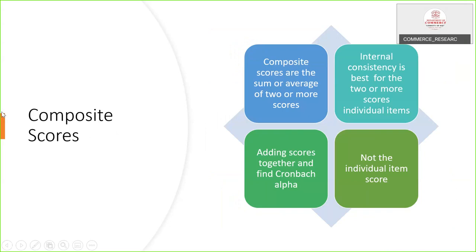Here we have to take care of the composite scores. Composite scores are the sum or average of two or more scores. While learning the Likert scale, we explained that Likert scales contain many statements. We have to take care of the composite scores, the reliability of the composite scores of all the statements. Internal consistency is best for two or more scores from individual items. Add scores together and find Cronbach alpha. That is the way of approaching Cronbach alpha, not the individual item scores. We have to take care of the combined scores of all the items in the construct.